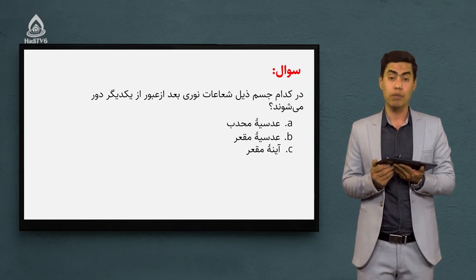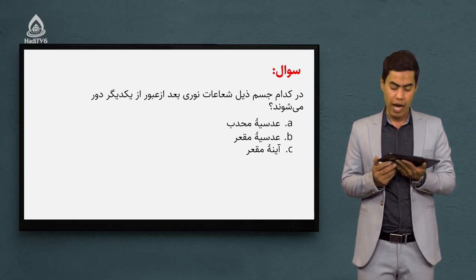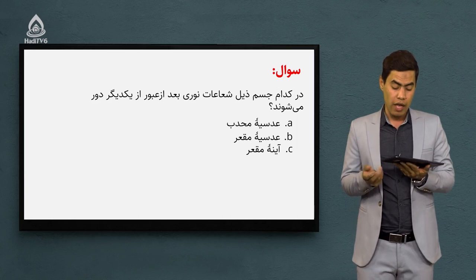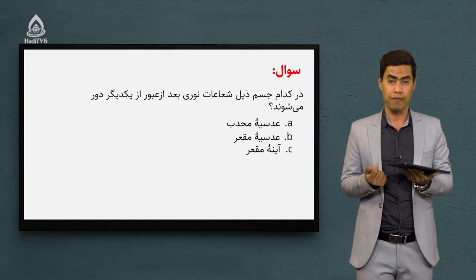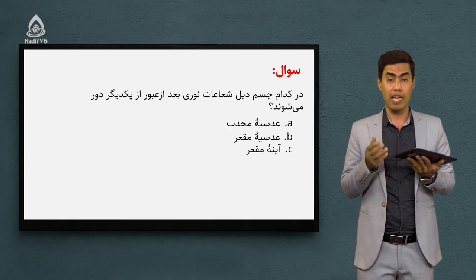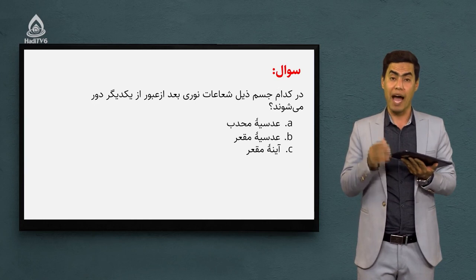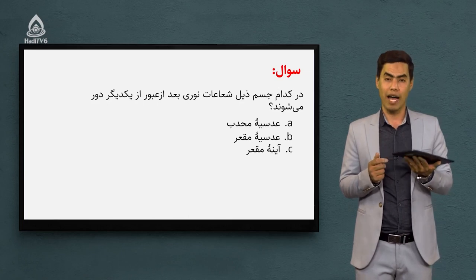سوال بعدی: گفته که در کدام جسم شعاع نوری بعد از عبور از یکدیگر دور می‌شن؟ گزینه اول عدسیه محدب، گزینه دوم عدسیه مقعر، و سوم هم آینه مقعر. گزینه سوم نیست چون پدیده شکست نور و انکسار نور فقط در عدسیه‌ها اتفاق می‌فته. عدسیه‌های مقعر عدسیه‌هایی هستن که وقتی اشعه‌های نور موازی وارد می‌شن بعد از انکسار از هم دیگر دور می‌شن. پس می‌شه گزینه دوم، عدسیه مقعر.